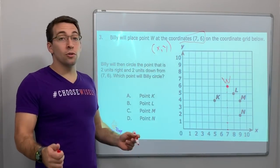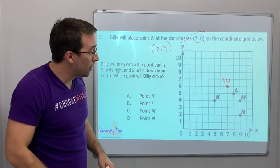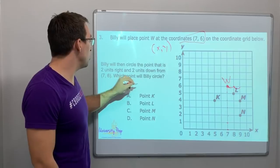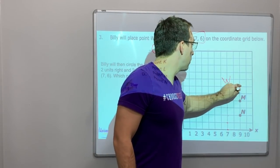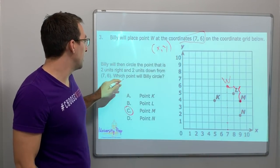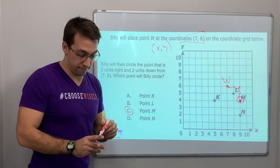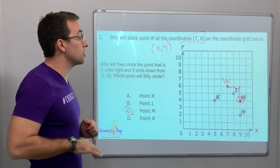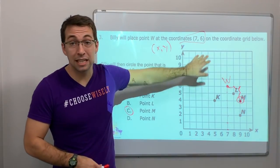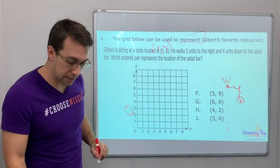Billy will then circle the point that is two units to the right and two units down. So what is two units to the right? One, two, and two units down. One, two. That is line M. Point M. Which point will Billy circle? He's going to circle point M. And so with coordinates and with this particular, there's multiple steps. Okay? We had to graph seven, six and then we had to move to the right and we had to move down. Take it one step at a time. One step at a time, always.